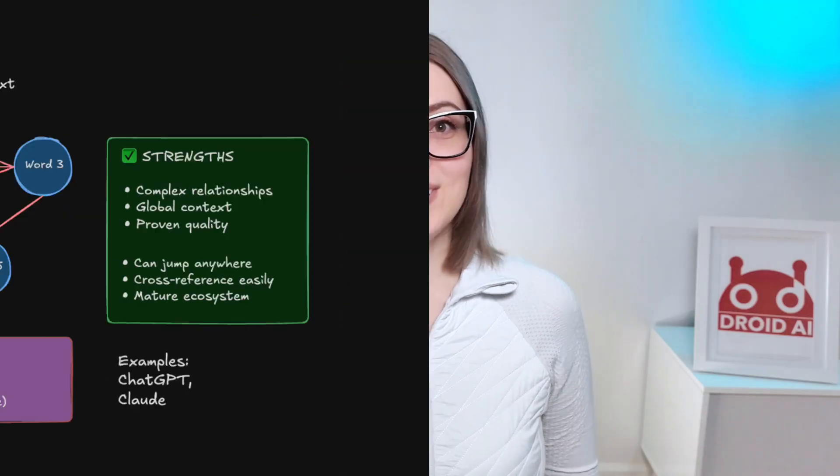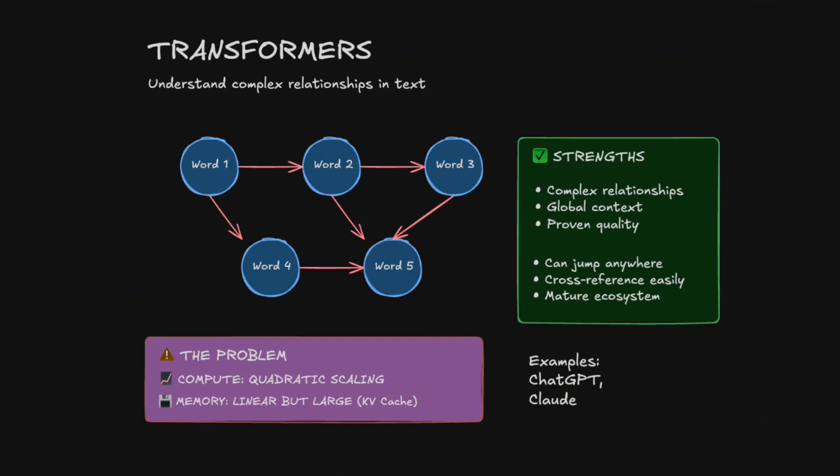First, let's understand why we even need different architectures. Transformers are the architecture behind most models you've heard of — ChatGPT and Claude use transformers. Transformers excel at understanding complex relationships in text. Think of transformers as reading a book where you can instantly see how every sentence connects to every other sentence. You can immediately link chapter 1 to chapter 10, spot patterns across the entire text, and understand complex relationships. It's why ChatGPT can maintain context throughout long conversations and understand subtle references.